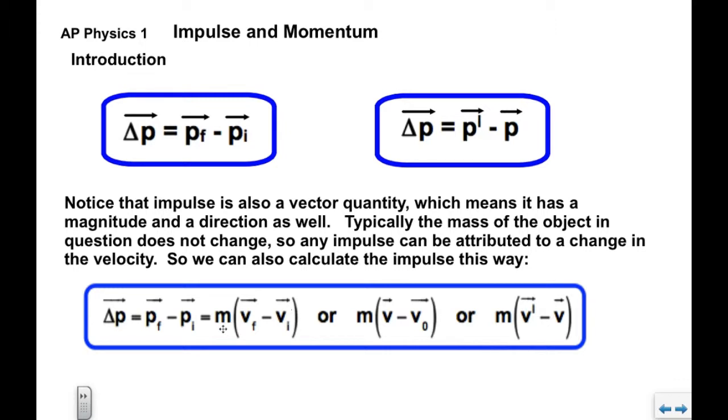Here's your original PF minus PI. We can also say that that's equal to the mass of the object times the quantity of VF minus VI, or final velocity minus initial velocity. If you prefer, when we did kinematics, we used V and V0 for the final and initial velocities.